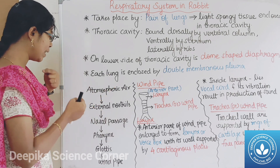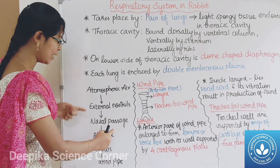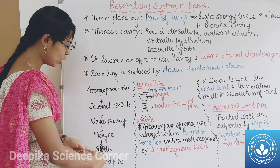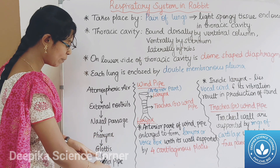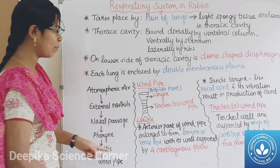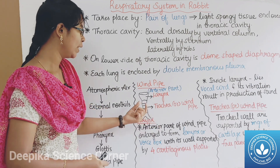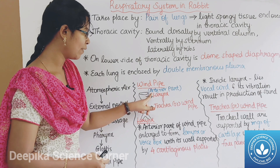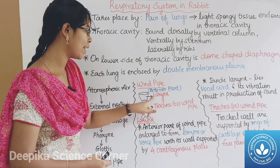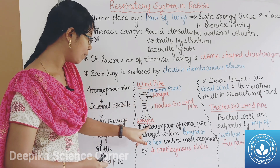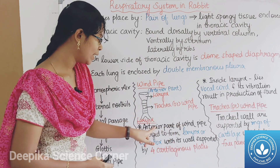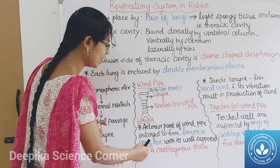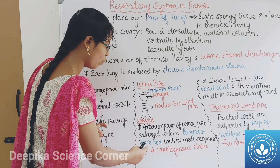External nostrils lead to the nasal passage. The nasal passage leads next to the pharynx, then the glottis. The glottis leads to the windpipe, which is the trachea. The anterior part of the trachea is the larynx.